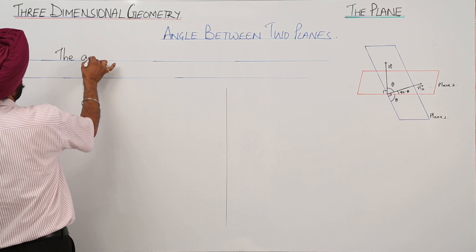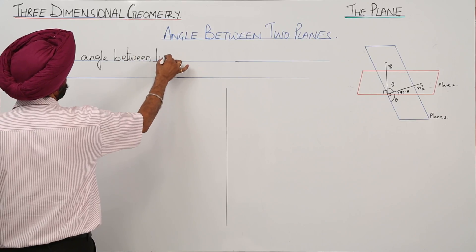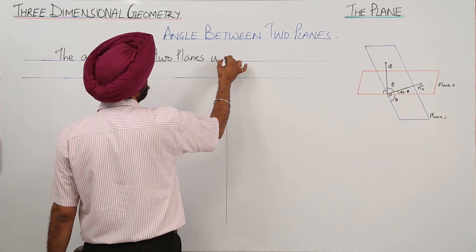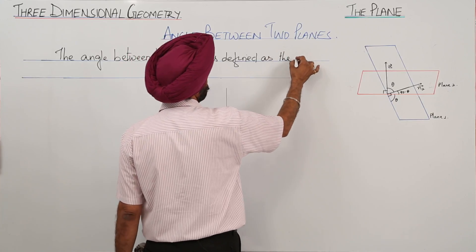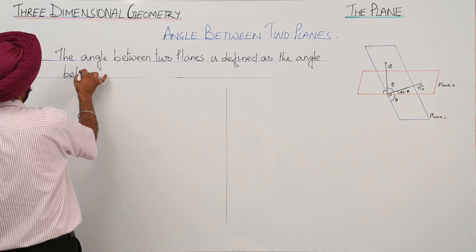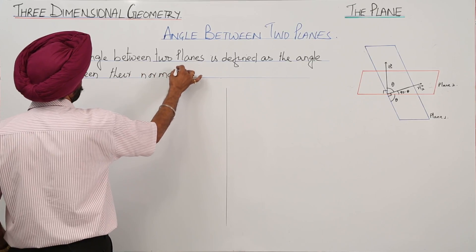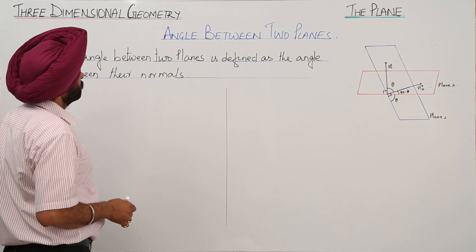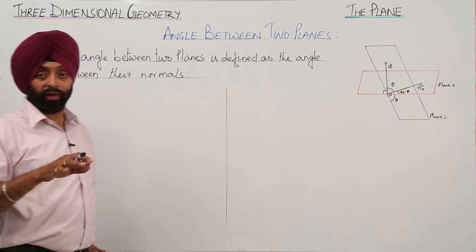The angle between two planes is defined as the angle between their normals. This is just a simple definition for the angle between two planes. Now let's write it in vector form and then in Cartesian form.